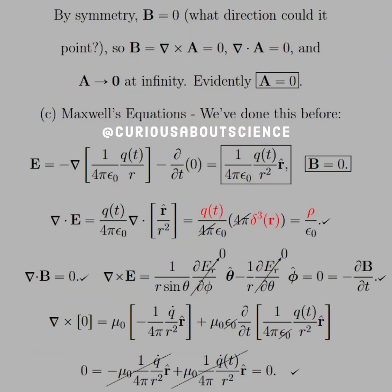By symmetry though, what this shows us is that B equals 0. What direction would it point, right? If it's a point charge that's not moving, we don't have a current, so it wouldn't really point anywhere. And hence symmetry tells us it's 0. So if that's the case, B equals the curl of A, and if that's equal to 0, well, we know that if the curl of a divergence is also equal to 0, hence the divergence of A equals 0. Let's go back to our vector calculus for that. And we also know that A goes to 0 at infinity, so with these two facts, A has to be 0. All right, fair enough.